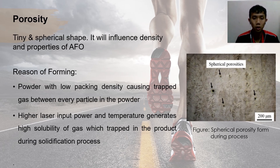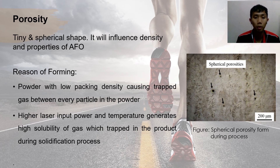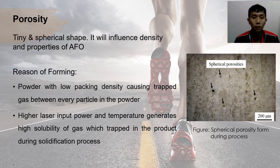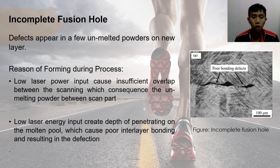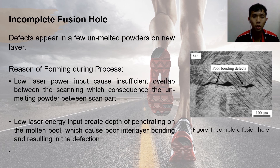The second processing problem from SLS is porosity, which is tiny and spherical in shape. It forms because powder with low packing density traps gas between particles. The high laser power and temperature will also generate high gas solubility which becomes trapped in the product during solidification. The third defect is the incomplete fusion hole, where unmelted powder appears on the new layer. Low laser input causes insufficient overlap, resulting in unmelted powder between scanning passes and poor bonding.